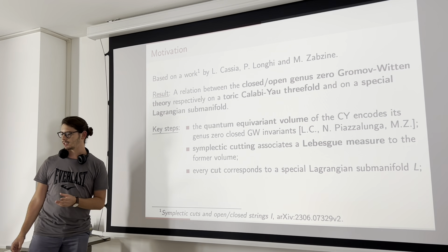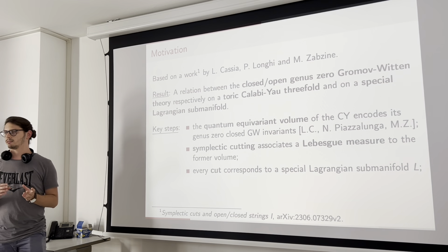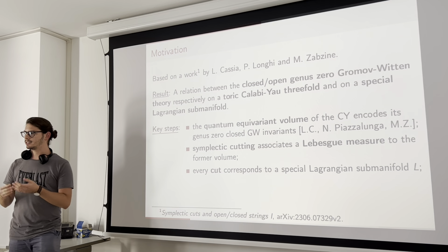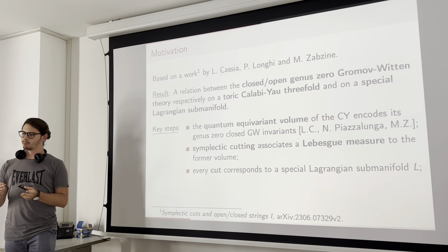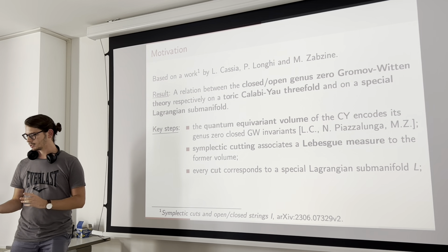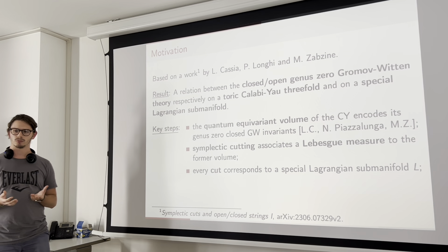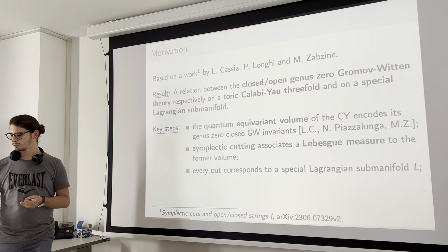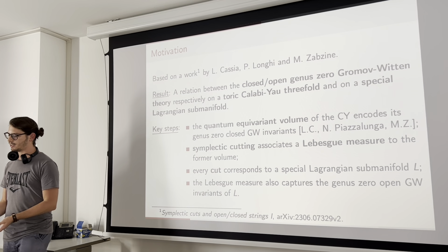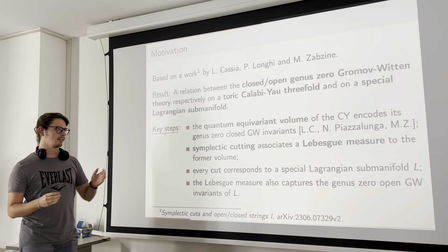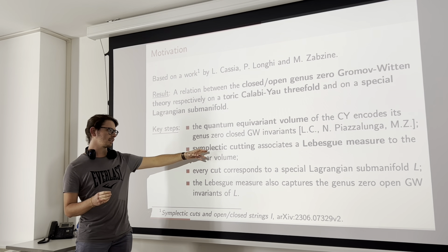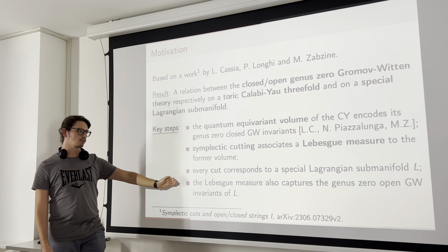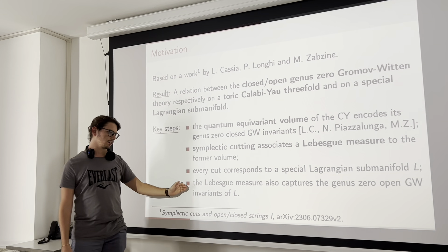Not only that — they were able to establish a non-canonical relation between every choice of symplectic cutting and a special Lagrangian submanifold. This is the main ingredient to establish the connection between the closed and open Gromov-Witten invariants, because we need to associate to any symplectic cut a submanifold for our brane to be supported on. Finally, this Lebesgue measure associated to the symplectic cutting not only encodes the closed Gromov-Witten invariants of the whole manifold, but also the open Gromov-Witten invariants of the Lagrangian submanifold L.